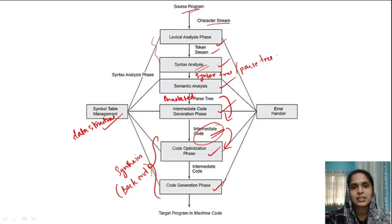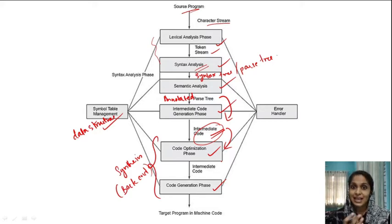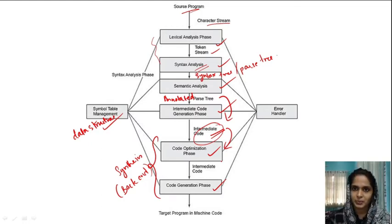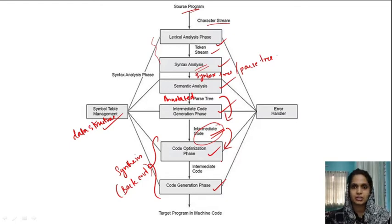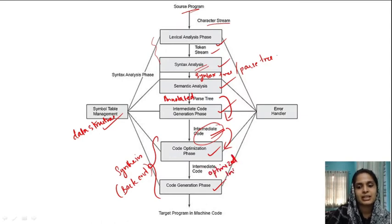What do we mean by code optimization? Optimization means we are trying to achieve better code. Better code can mean fewer lines, less power consumption, or smaller size. So in the code optimization phase we convert our code to get a better version. The output of the code optimization phase will also be an intermediate code, but an optimized intermediate code.